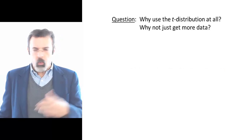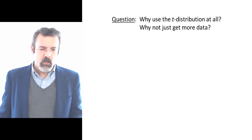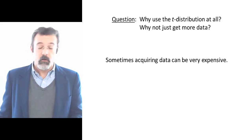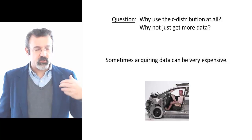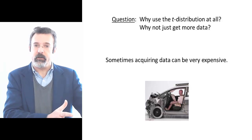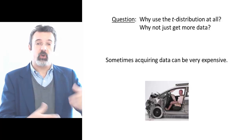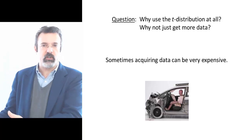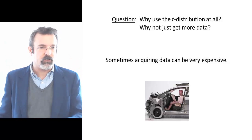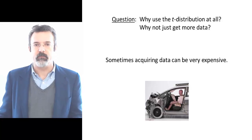This raises the question: why bother with the T distribution at all? Why not simply go and collect more data? The problem is that sometimes acquiring data can be extremely expensive. For example, when automobile manufacturers conduct crash tests, they take a brand new car and run it into a concrete barrier and measure various things that have happened to the car. This is one observation, and the cost of acquiring it was the destruction of a brand new car — every single observation costs somewhere between $20,000 and $30,000. So clearly it becomes too expensive to collect hundreds of observations.